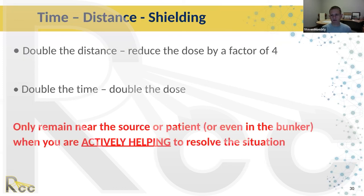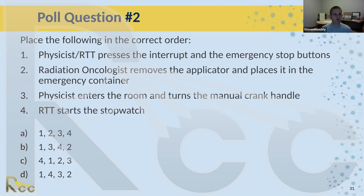Regarding time, distance, and shielding: doubling the distance reduces dose by approximately a factor of four through inverse square law. Doubling time doubles the dose. Only remain near the source, patient, or inside the bunker when you are actively helping. If you're not actively helping, just take a step back — that step back is a big deal.